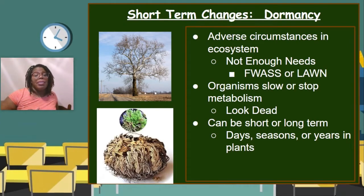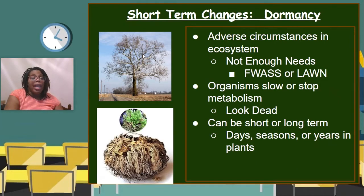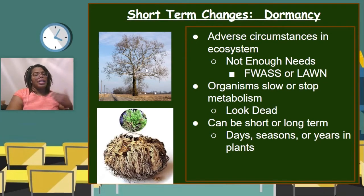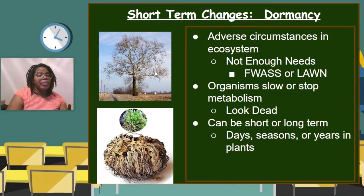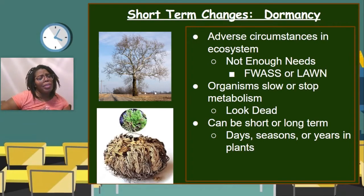Dormancy can be short-term or long-term. A deciduous tree in Virginia is a great example — our hardwood trees go dormant every fall, losing all their leaves and looking like they're dead. That prepares them for winter when it's colder, when there isn't as much water or sunlight available, but they still want to stay alive. Then in the spring, little green buds appear and the plant continues living like nothing went wrong. That is a short-term change because it only lasts the season.